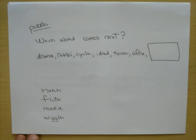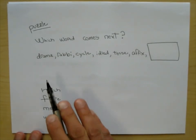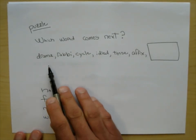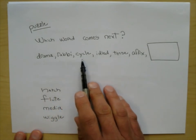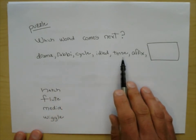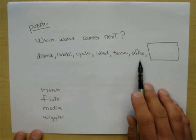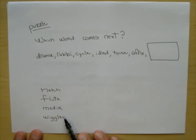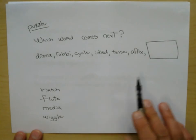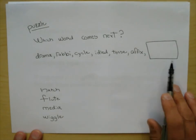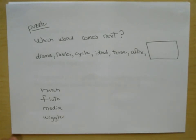Which word comes next? It's a sequence of words: Drama, Rabbi, Cycle, Idle, Tense, Affix — and then which word from this list can you put into that box? That is the puzzle.